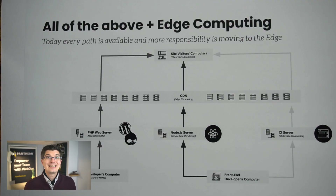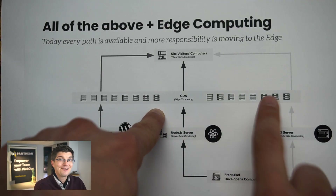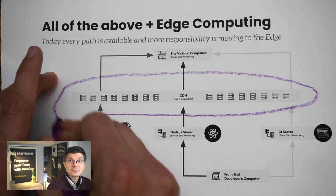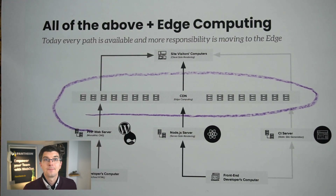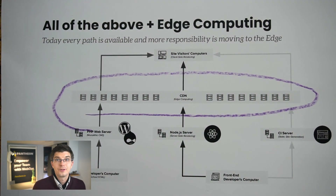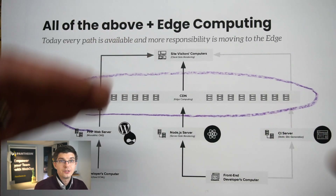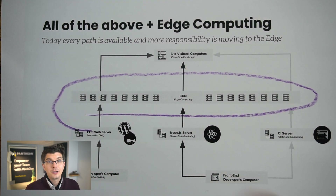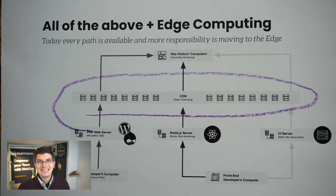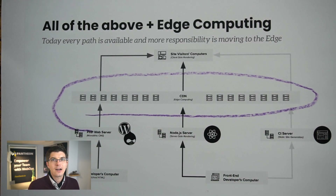You want to be well-positioned for what's next. And what's next is this CDN, or content delivery network, box — the layer that gets spread all over the world. It's close to your website visitors, whereas these other layers are in one, maybe two data centers. CDNs sometimes get called 'the edge' because they are on the edge of this network of computers.